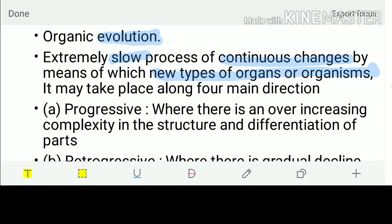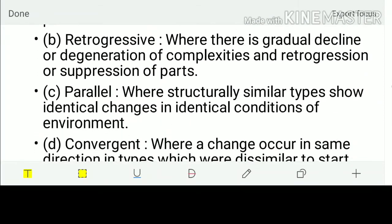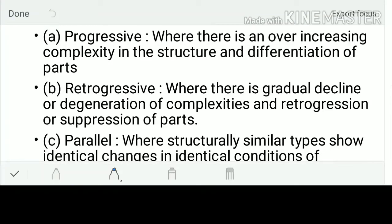Evolution may be of four different types: Progressive Evolution, Retrogressive, Parallel and Convergent. Progressive Evolution is when there is an ever-increasing complexity in structure, meaning a simple organism becomes more complex over generations. Retrogressive Evolution is when there is a gradual decline or degeneration of complexities — Progressive is forward, Retrogressive is backward.